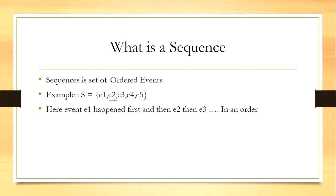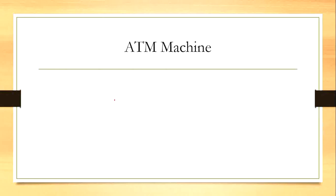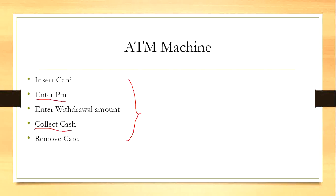For example, consider amount withdrawal in an ATM machine. The events could be like - all these are ordered events because collect cash is an event and we cannot perform that event before entering PIN and vice versa.